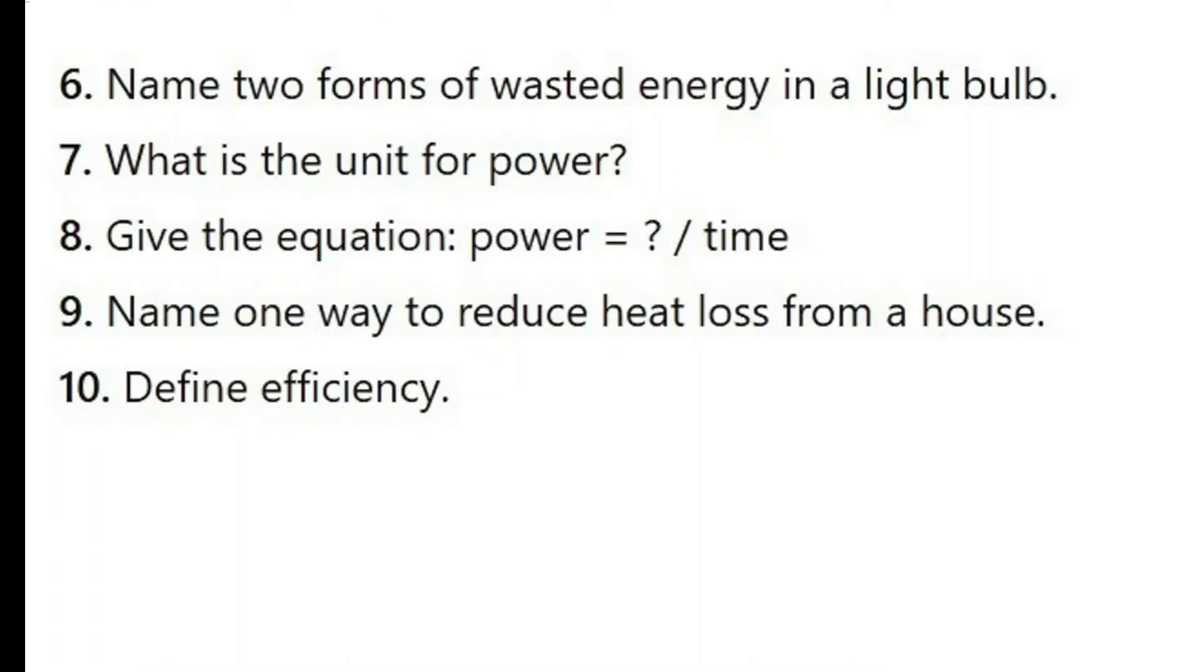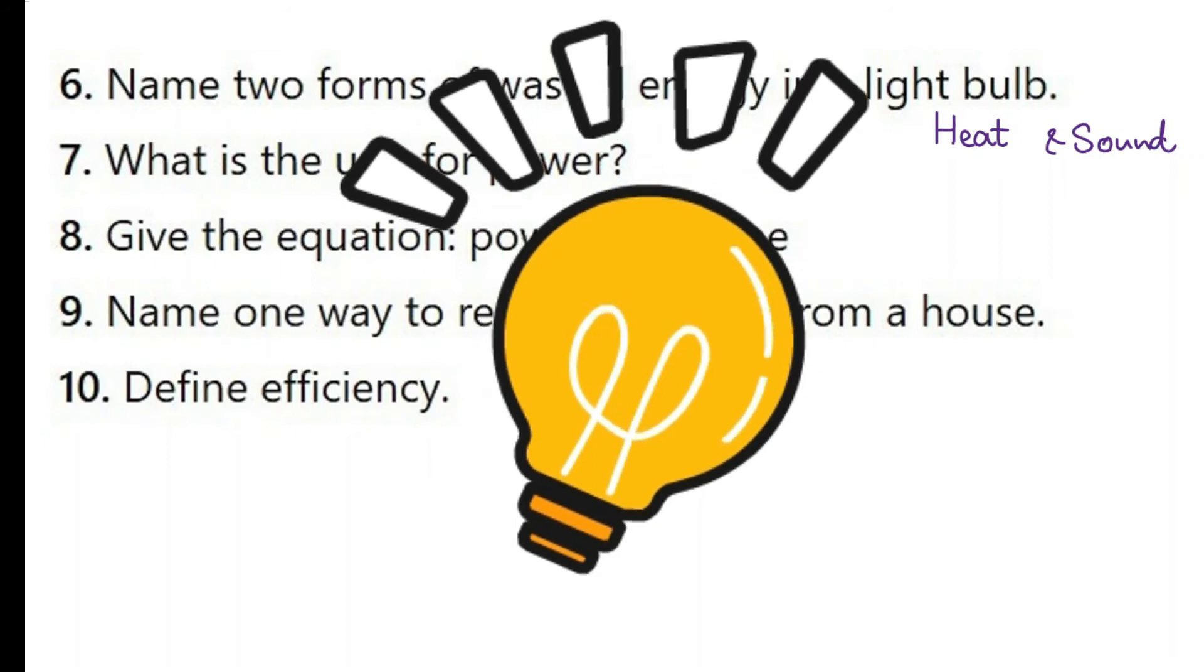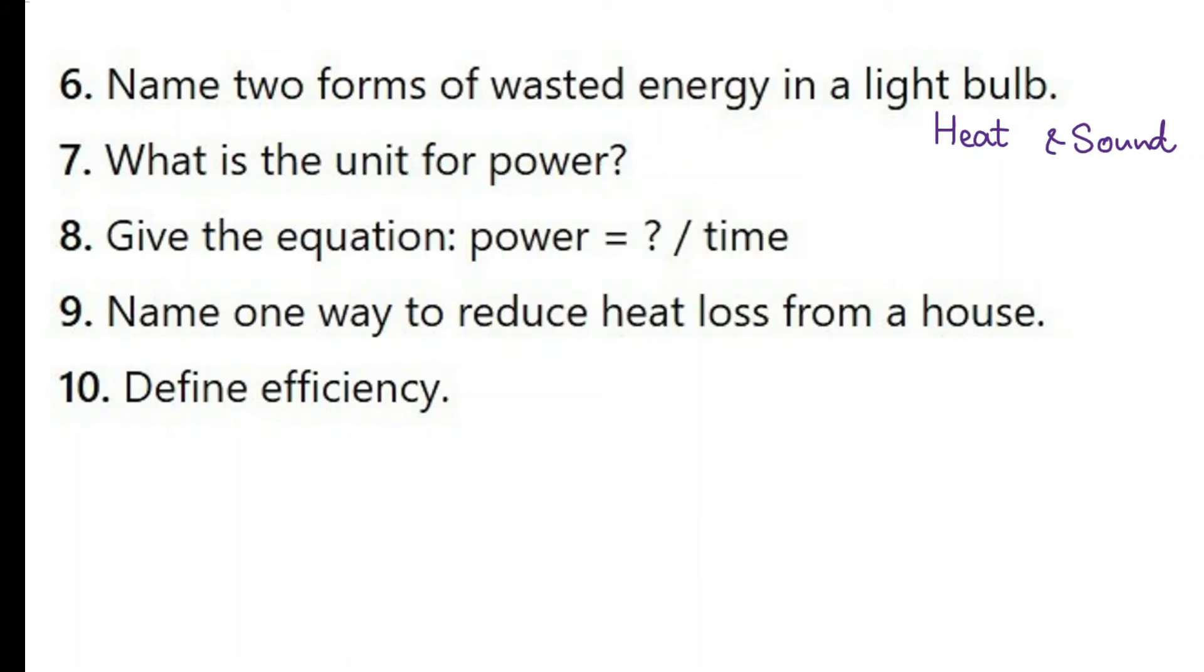Here you can see questions 6 to 10. Pause the video and do them please. Name two forms of wasted energy in a lightbulb. The answers are heat and sound. The amount of sound energy that is wasted by a lightbulb is extremely small. If you think about it, the buzzing or this faint hum that you might hear from some lightbulbs, especially fluorescent or older ones, is due to small vibrations of the components. What is the unit of power? Power is measured in a unit called watts, or you can call joules per second. You can also write J/S. It's the same thing. Give the equation. Power is equal to something divided by time. You can use energy here or work done. They are both okay. Energy divided by time or work done divided by time.